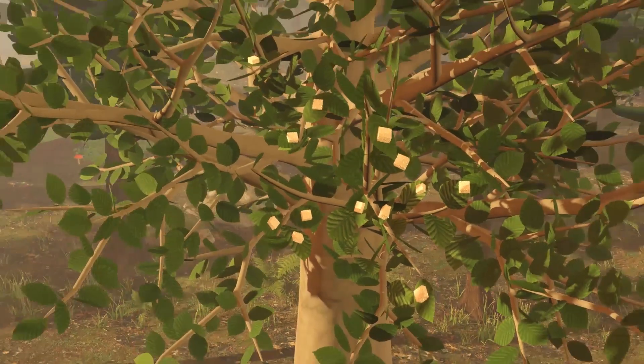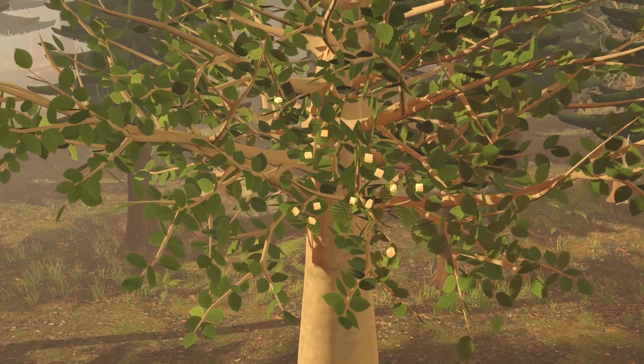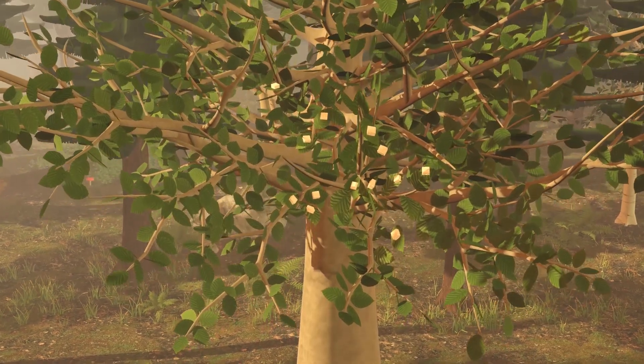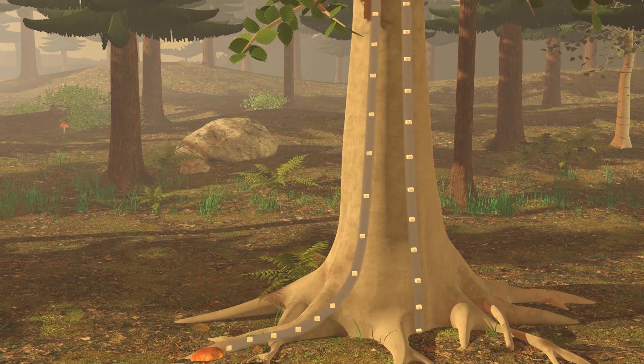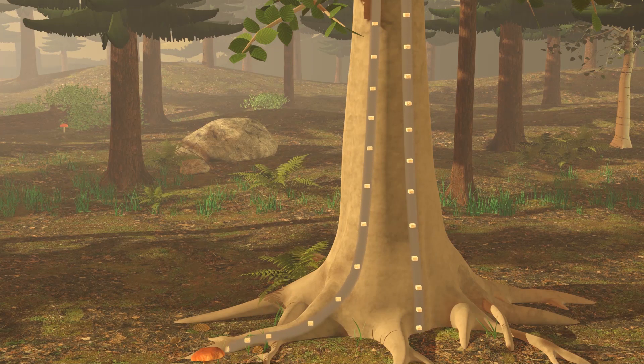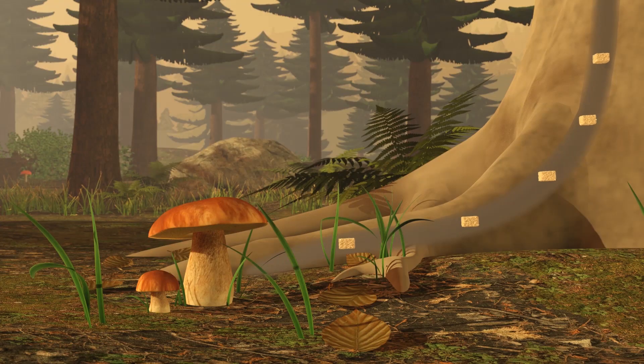So much dextrose is produced that it's more than enough for the whole beech tree. What is left over, which can be up to a third, is transported underground. For fungi, this process is essential for survival, as they themselves cannot produce any dextrose.